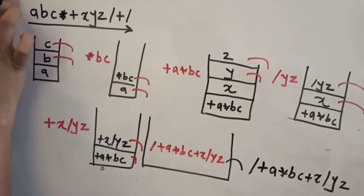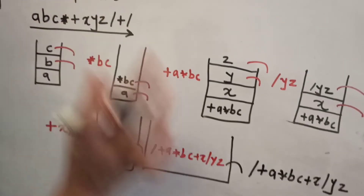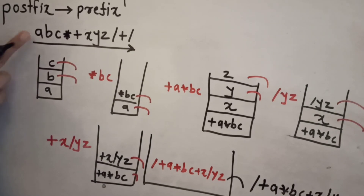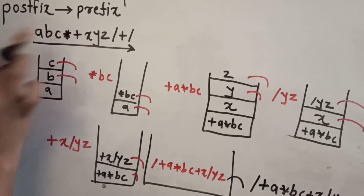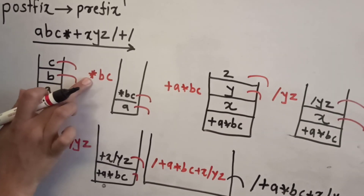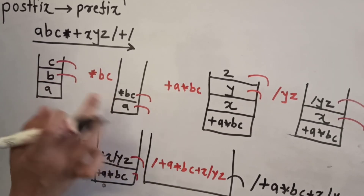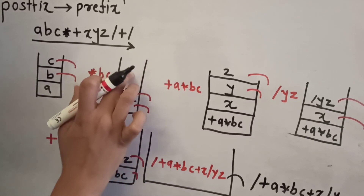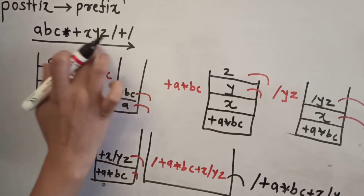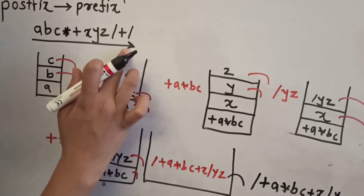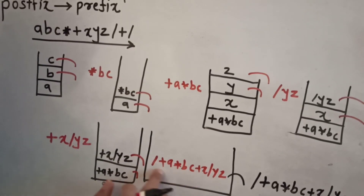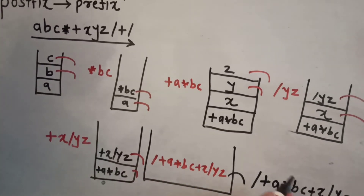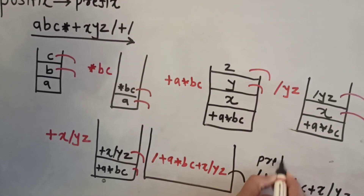In this way, we convert postfix to prefix. We scanned the expression from left to right. Whenever operands appeared, we pushed them onto the stack. Whenever an operator appeared, we formed the prefix expression using the operator and the two deleted operands, then pushed that result back onto the stack. This process repeated until the expression was fully scanned, and the final result on the stack was our prefix expression.